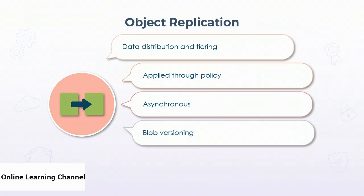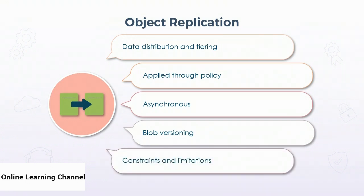Blob versioning must be enabled on both storage accounts and triggers the replication process when a blob is modified. When blobs are deleted, only the current version is deleted; previous versions will remain. Constraints on the object replication process include: snapshots on data are not supported, blobs in the archive tier cannot be replicated, blobs can be replicated from hot to cool and cool to hot tiers, and immutable blobs cannot be replicated.